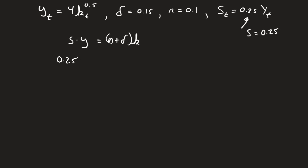my y is going to be multiplied by 4k to the 0.5, n plus delta, we've got 0.15 plus 0.1 is going to be 0.25, and then we have our k left over. Great thing here is we have 0.25s on both sides of the equation, we can just cancel those out.